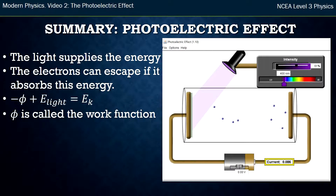So this is a summary. In the next two videos, I'm going to talk about the surprising results of the experiment and the explanation for those results. For now, we've described the experiment where light supplies energy, electrons absorb the energy, and they can escape if they have enough. The energy equation uses negative phi because we're trapped in an energy well — we need to gain energy to escape, which comes from the light and contributes to kinetic energy. That symbol phi is the work function. It's a constant: sodium has its own value, magnesium has its own value, and every metal will have its own value.